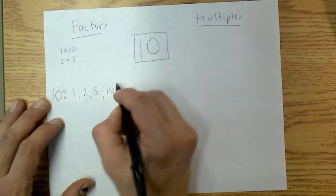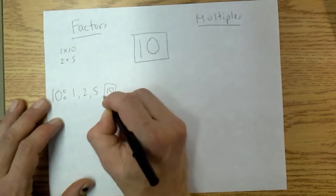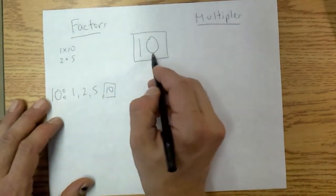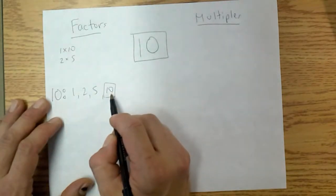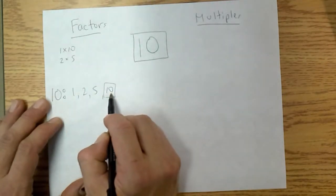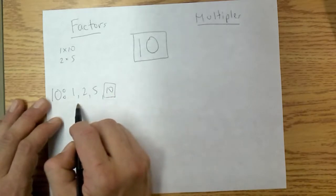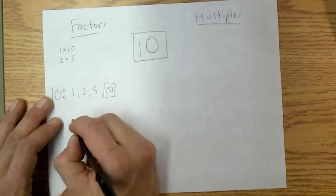Notice that the largest factor of 10 is 10, the number itself. So when we're dealing with factors, the number itself is always a factor because 1 times the number will always work, and then they get smaller. And this is a finite list.